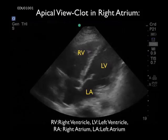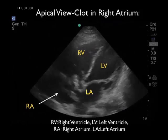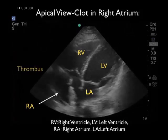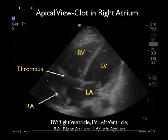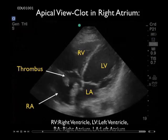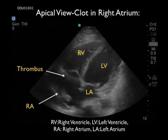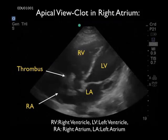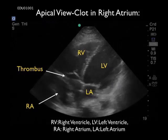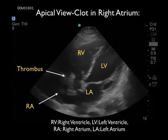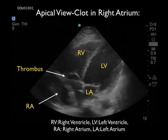This is an apical view from the same patient. Notice here we see the thrombus bouncing around in the right atrium. Notice that it actually passes out through the tricuspid valve into the right ventricle, and then is pushed back into the right atrium. This was a very interesting case in that the patient had relatively high pulmonary arterial pressures and a large amount of tricuspid regurgitation that pushed the thrombus back into the right atrium.